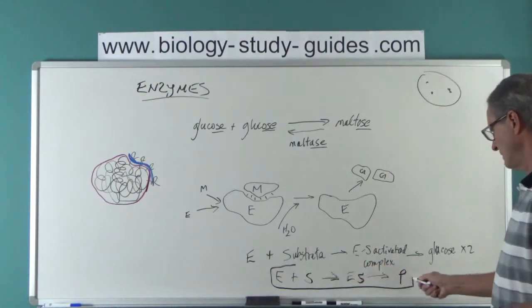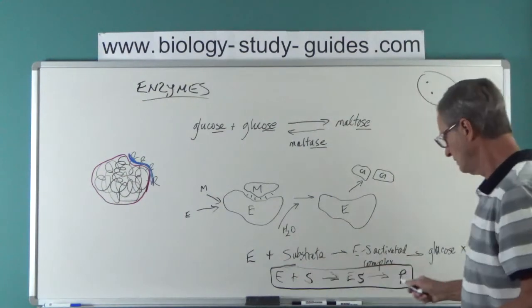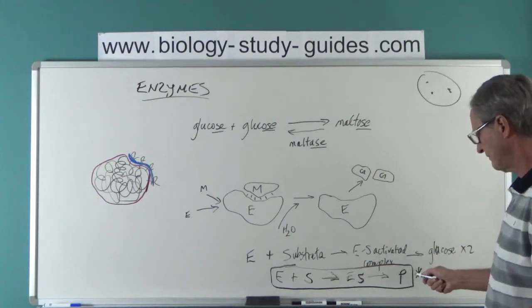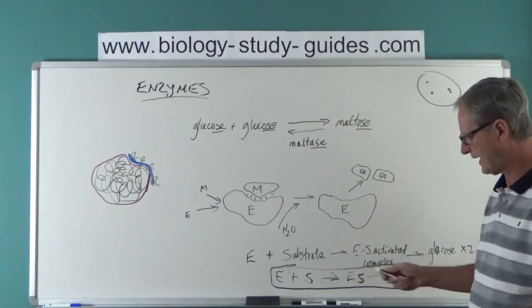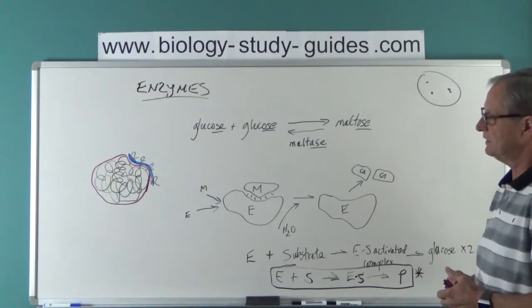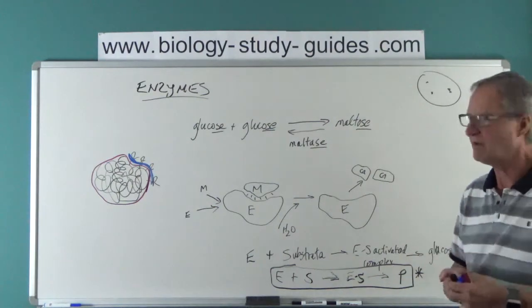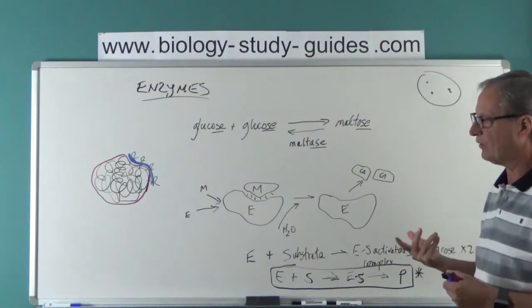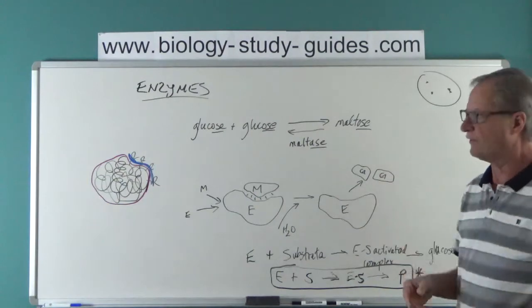This is E plus S forms E-S temporarily, which gives you the products. This is true for all enzyme reactions. E plus S forms the activated enzyme substrate complex, which gives rise to the products. So this gives you a basic understanding of what enzymes are all about, gives you an idea of where we're going with this topic.